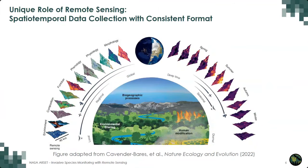What makes remote sensing a viable approach to monitor invasive plants? The primary reason is that remote sensing can help us collect data across large spatial domains over time with a consistent format, which is a great advantage compared to field-based techniques. Field-based techniques require visiting a large number of points and documenting the status of invasive plants, but they are costly, time consuming, and cannot be repeated frequently because of that high cost. So remote sensing has a lot of potential to monitor invasive plants.